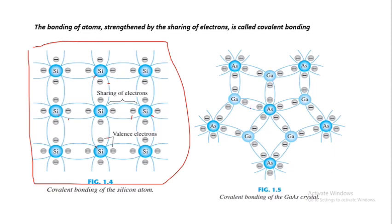Similarly, the gallium arsenide structure works on the same principle. Gallium has 3 valence electrons and arsenic has 5. In gallium arsenide, arsenic gets 3 electrons from its neighboring atoms to complete its outermost shell, forming covalent bonds.